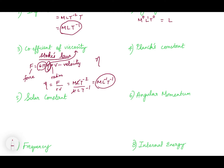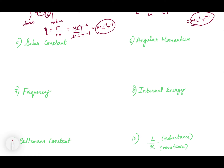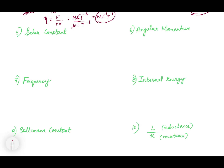Now Planck's constant — there is a formula λ = h/mv, where h is Planck's constant. Lambda is wavelength, so it has dimension L. M is mass with dimension M. V is velocity LT⁻¹. We write h = λ × m × v, so it is L × M × LT⁻¹, which becomes ML²T⁻¹. This is the dimension of Planck's constant.